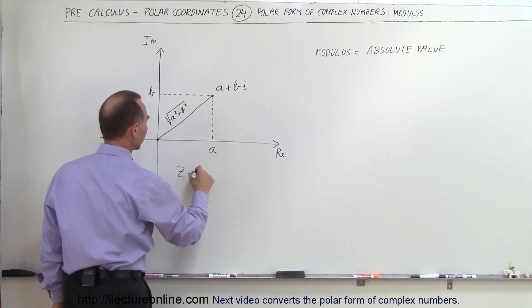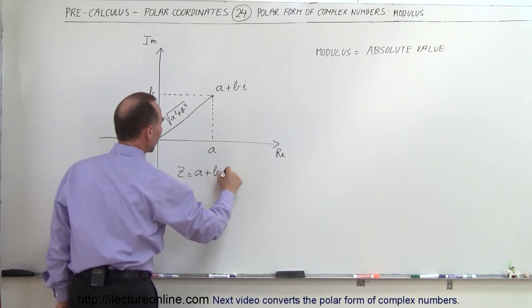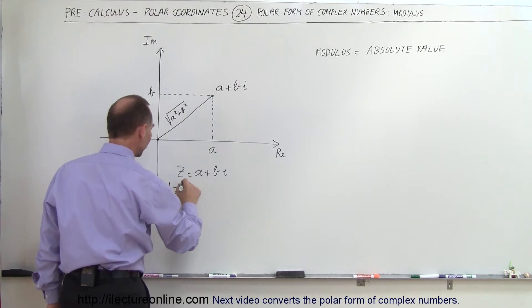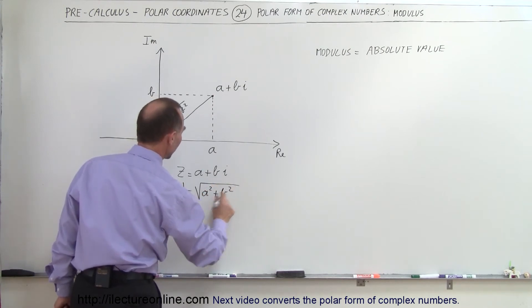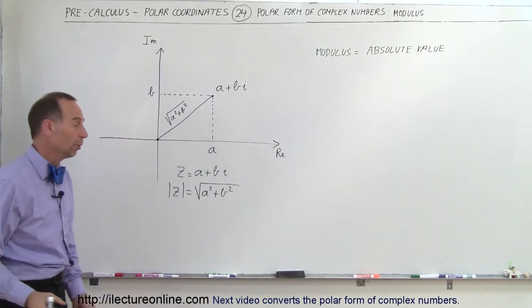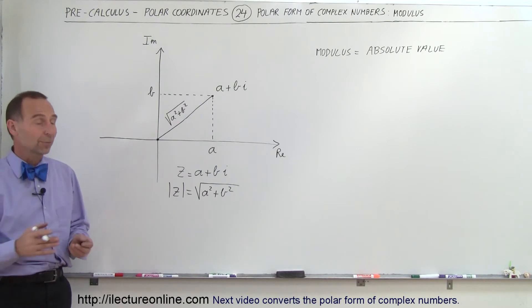So if z equals a plus bi, then the absolute value of z, which is also known as the modulus of z, is equal to the square root of a squared plus b squared, which is basically the distance formula. Or you could also think of it as the Pythagorean theorem.